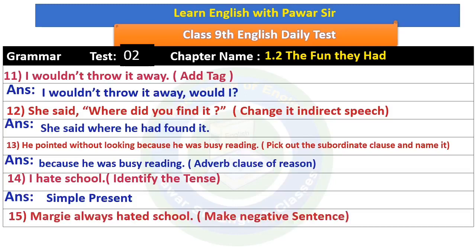'Margie always hated school.' Make a negative sentence. You should know about opposite words. Using opposite words: 'Margie never loved school.' That is the negative form.